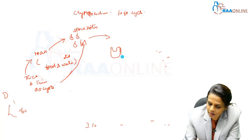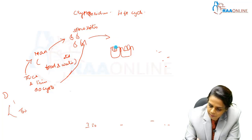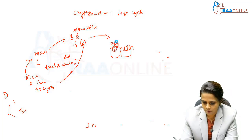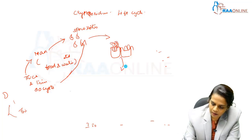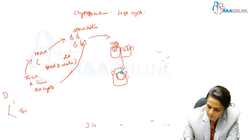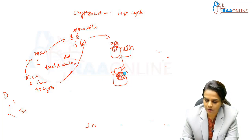These sporozoites invade the brush border epithelium of the small intestine. Then it forms the parasitophorous vacuole near the microvillate surface — the parasitophorous vacuole.